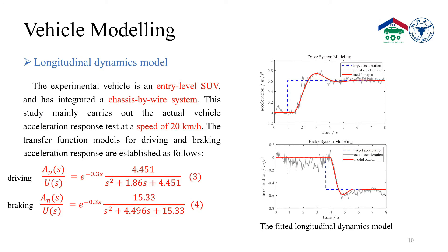The second model is the longitudinal dynamics model. The experimental vehicle is an entry-level SUV with an integrated chassis-by-wire system. This study mainly carries out the vehicle acceleration response test at a speed of 20 km/h. The established transfer function model is fitted with vehicle test data as shown in the picture. The transfer function models for driving and braking acceleration response are established as equations 3 and 4, respectively.